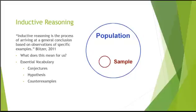So what does this mean for us? Basically what that's saying is that we're going to make a conjecture or an educated guess based off of what we observe of a small sample of a larger population.